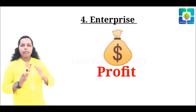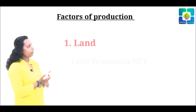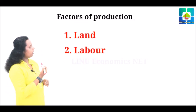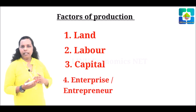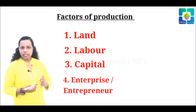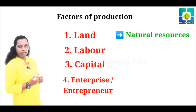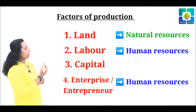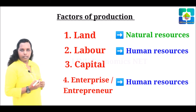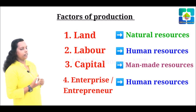As we discussed, the factors of production are the resources. So land, labor, capital, and enterprise can be expressed in another way. Land we can call natural resources. Labor and entrepreneur we can include under human resources. Capital is man-made resources.